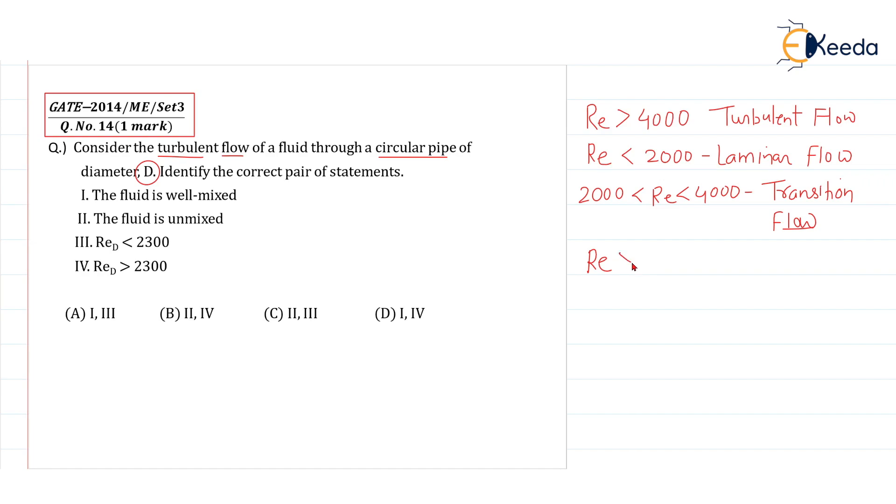So for turbulent flow, Reynolds number should be greater than 2300. So definitely Reynolds number should be greater than 2300 for turbulent flow. If it is less, it can be laminar. So Reynolds number should be greater than 2300. The fourth option is correct one.